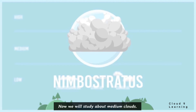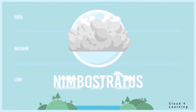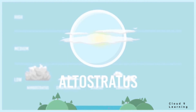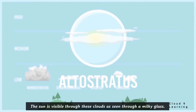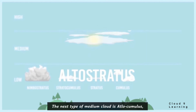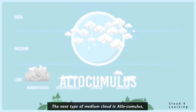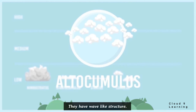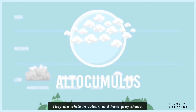Now we will study about medium clouds. The first one is altostratus. Altostratus clouds are gray or blue-gray and usually cover the whole sky. The sun is visible through these clouds as if seen through a milky glass. These clouds are comparatively thin. The next type is altocumulus. Altocumulus clouds are in the form of layers with a wave-like structure; they are white in color with a gray shade.